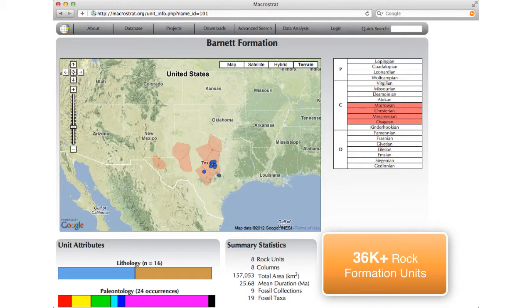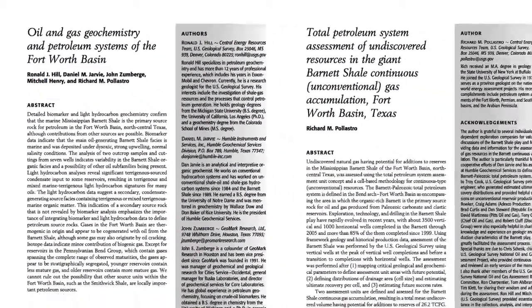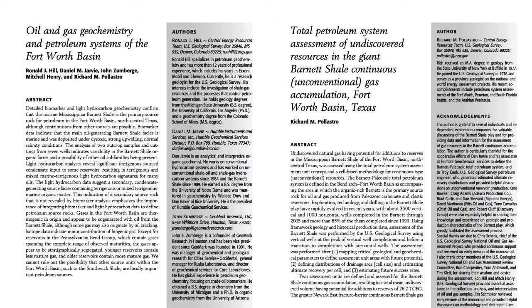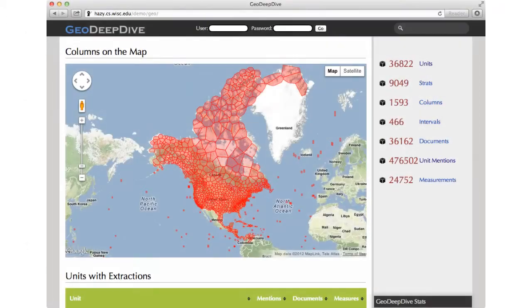There is also geologically relevant information in journal articles like this one. GeoDeepDive extracts information about these rock formations from journal articles. As of today, GeoDeepDive has processed over 36,000 research papers. This is the GeoDeepDive homepage. It shows a summary of the results of GeoDeepDive's deep linguistic and statistical processing.